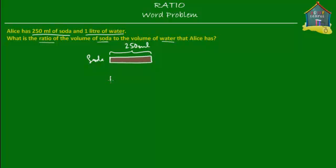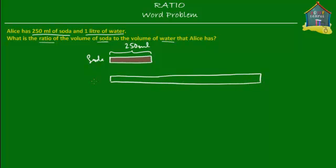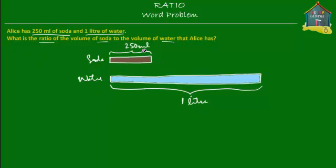One liter is definitely more than 250 ml, so one liter would be about this much — this is one liter of water. Liter as well as milliliter are both units of volume, and one liter is definitely more than 250 ml. So what we've got is 250 milliliters of soda and one liter of water.